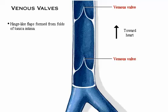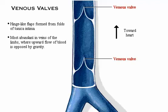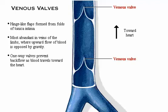Venous valves are hinge-like flaps formed from folds of the tunica intima. Venous valves are most abundant in the veins of the limbs, where the upward flow of blood is opposed by gravity. The one-way venous valves prevent backflow as blood travels toward the heart. Click on a valve to see the direction of blood flow.